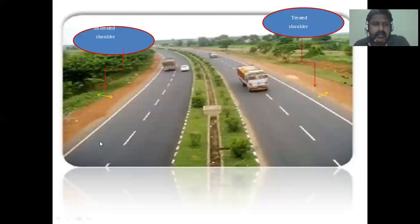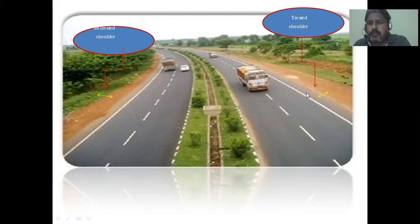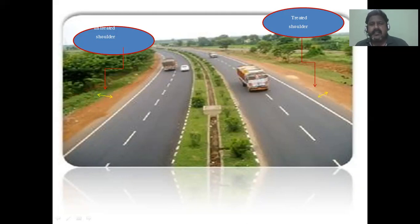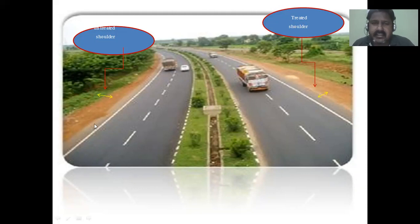Looking at photographs of shoulders: these are the shoulders on the side of the road. This is a treated shoulder — a car or truck can safely pull over to the side. This is untreated — the grass is down and the slope is uneven. So there are two types of shoulders: treated and untreated.